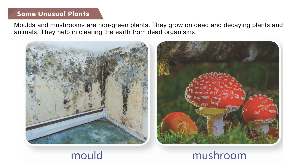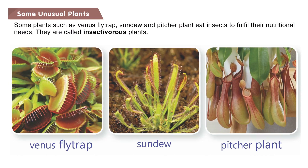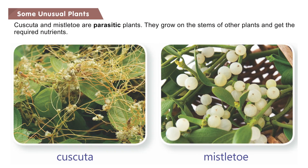Some unusual plants: Moles and mushrooms are non-green plants. They grow on dead and decaying plants and animals and help in clearing the earth from dead organisms. Some plants such as Venus flytrap, sundew and pitcher plant eat insects to fulfill their nutritional needs; they are called insectivorous plants. Cascuta and Mizzalto are parasitic plants — they grow on the stems of other plants and get the required nutrients.